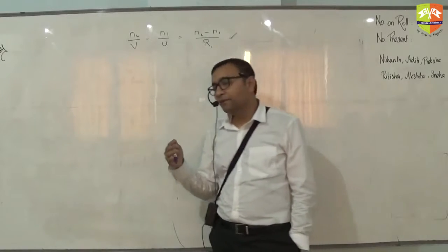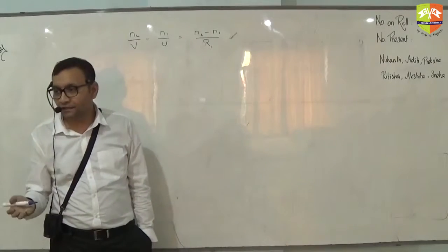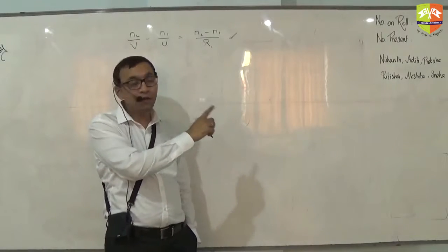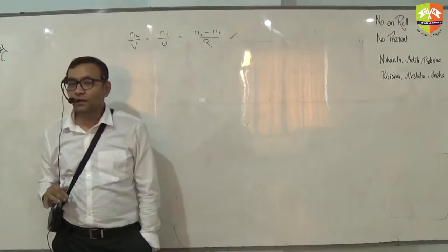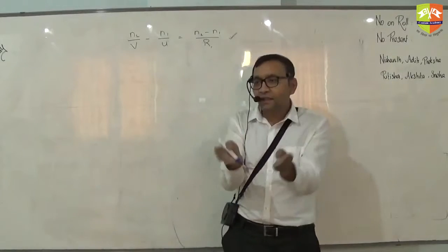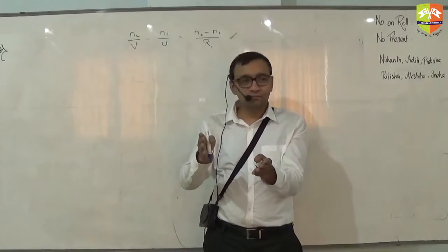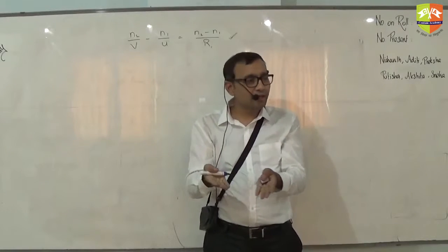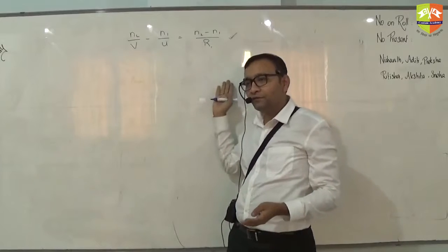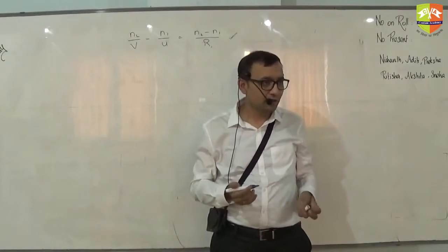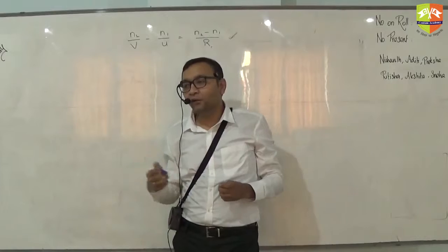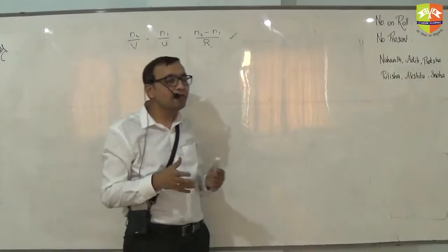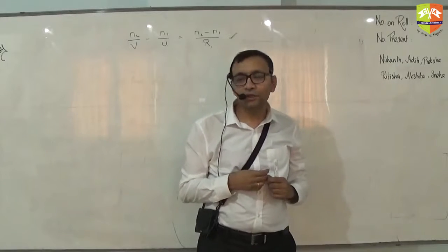The topic which we are going to study right now is lens. Even for lenses, whatever formula you will derive will be from this particular equation, because lens has two interfaces - one interface this side, other interface that side. So you will use one interface formula and other interface formula. Why we are finding out lens formula if we already have interface formula? Why do we need the lens formula?